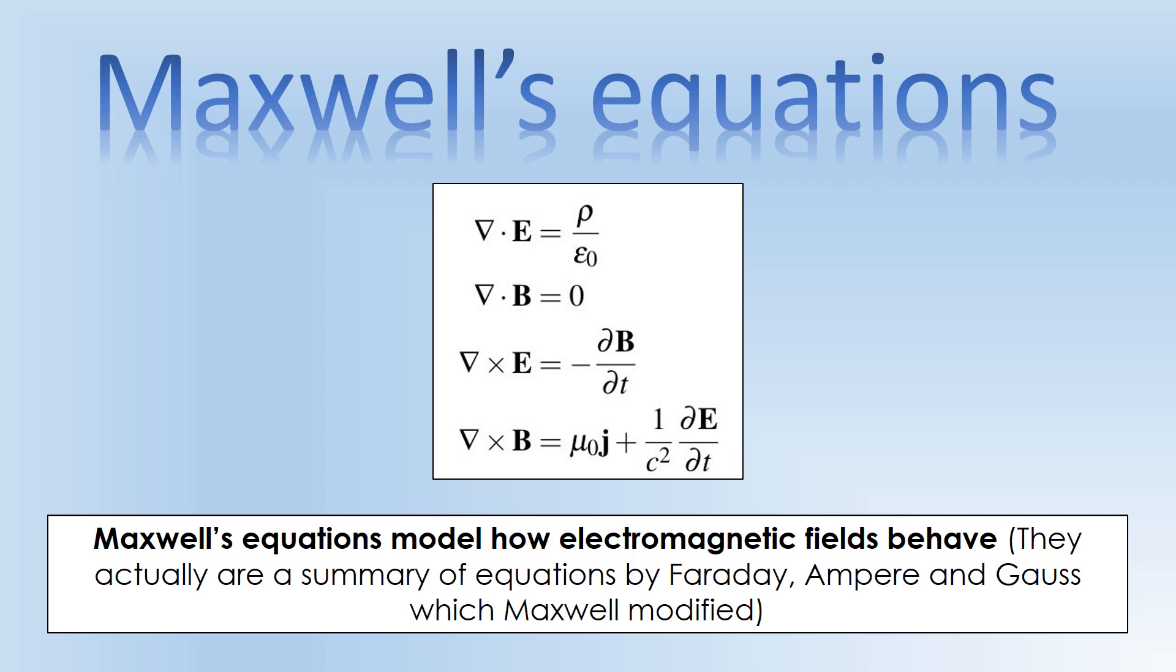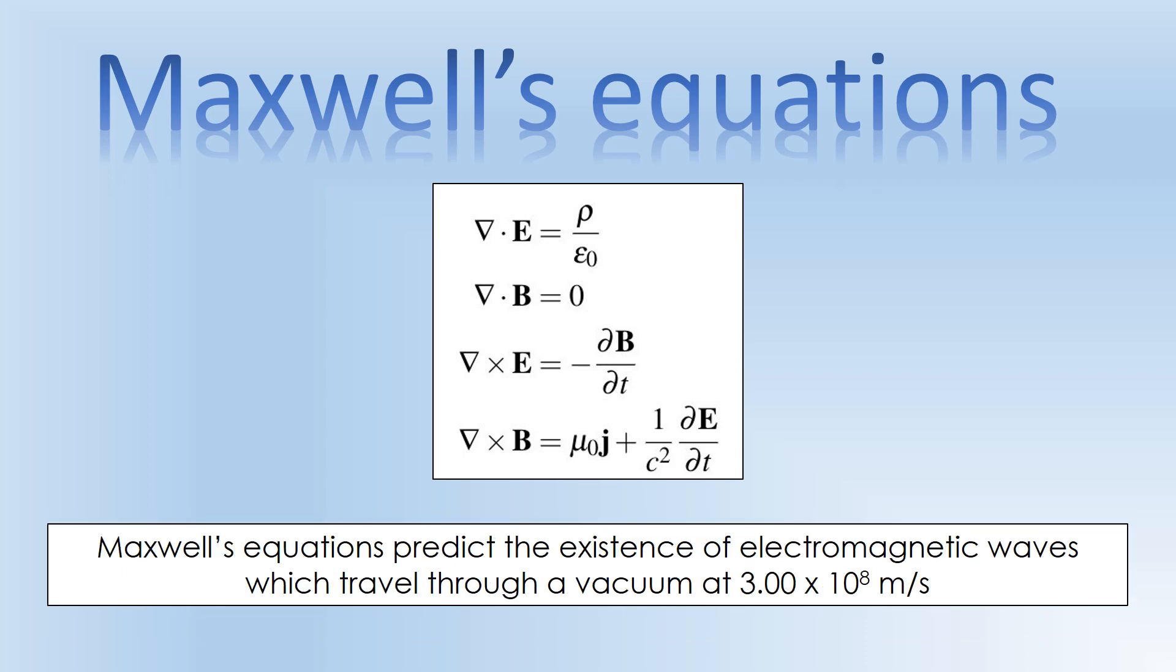There are a set of equations we use to describe electric and magnetic fields and how they interact and relate to one another, and those are called Maxwell's equations. They are actually the summary of a series of different equations by a whole range of physicists. Essentially, you can use Maxwell's equations to predict the existence of electromagnetic waves, and you can use it to predict a speed at which they travel in a vacuum, and that's 3 times 10 to the 8 meters per second. That's the key idea to take away. The key thing is we can use them to predict electromagnetic waves traveling at 3 × 10⁸ meters per second.